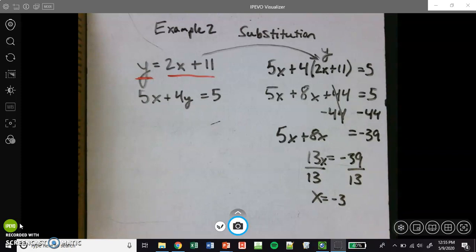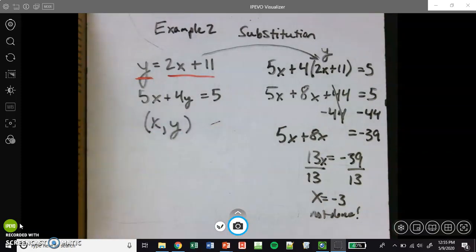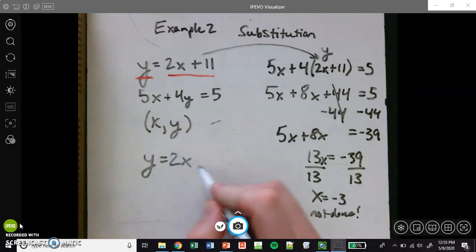Now, just like the last one, people get excited, but we are not done yet. Remember, we are looking for an answer like this, it's an ordered pair that's x and y. We just have x right now. So what we'll do is we'll take our first equation, it's a little easier to plug into, and we'll rewrite it but substitute in the value for x.